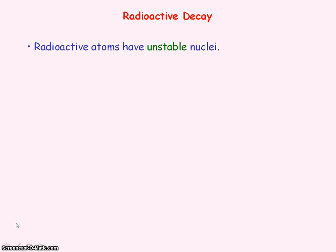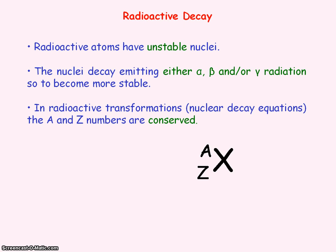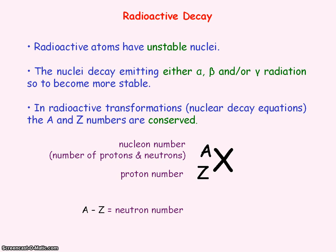Radioactive atoms have unstable nuclei and these nuclei decay to emit either alpha, beta, and/or gamma radiation. For a radioactive transformation, the nuclear decay equation, the A and Z numbers are conserved. Z is the proton number — the number of protons inside the nucleus — and A is the nucleon number, representing the number of protons and neutrons inside the nucleus. A minus Z gives us the neutron number.